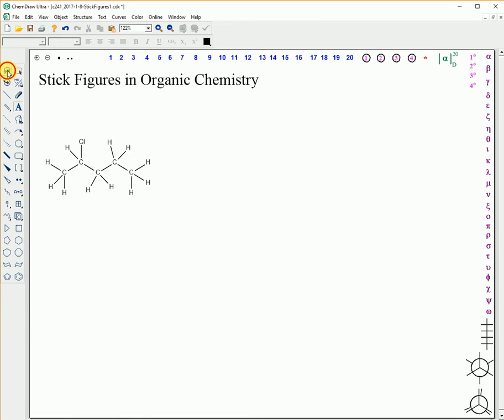Lewis structures have the most information, but they take the longest time to draw. As you can tell, this is not a complete Lewis structure yet because we do not have the lone pairs on our chlorine. You can stop timing me right now because I'm finished. That took a long time.